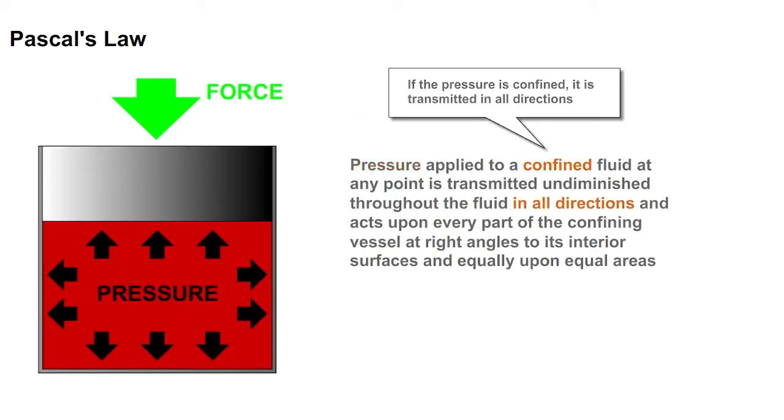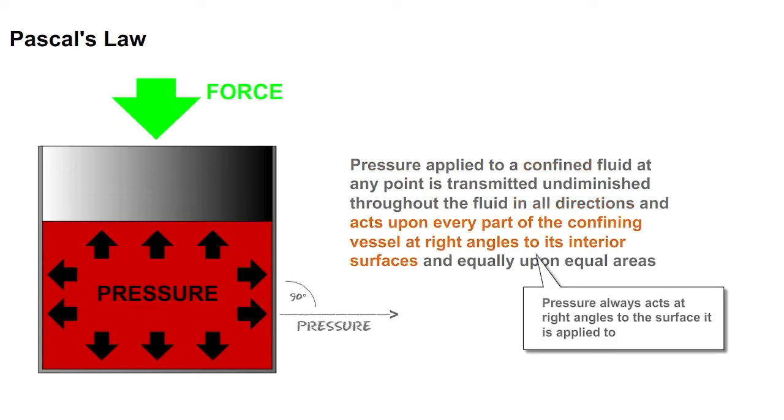If the pressure is confined, it is transmitted in all directions and acts upon every part of the confining vessel at right angles to its interior surfaces. Because pressure always acts at right angles to the surface it is applied to.